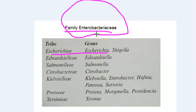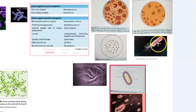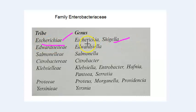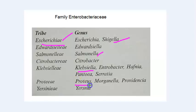Enterobacteriaceae means something to do with the intestine. So Escherichia coli, or E. coli, is a gram-negative bacteria. Under Escherichia you have E. coli and Shigella. You also have Salmonella, Klebsiella, Proteus, and Yersinia — which causes plague — all under the family Enterobacteriaceae.